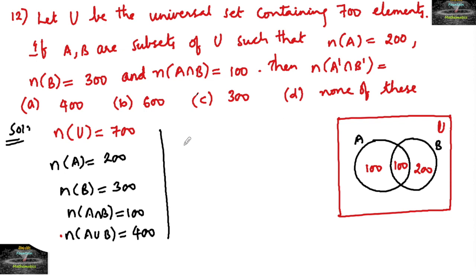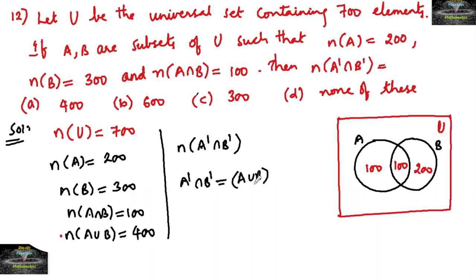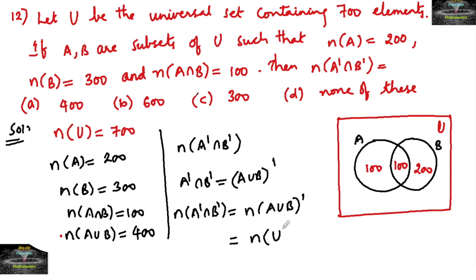Now to find n(A' ∩ B'): from De Morgan's law, A' ∩ B' = (A ∪ B)'. This represents the elements not belonging to A ∪ B — the elements outside of A ∪ B within the universal set U. So n(A' ∩ B') = n((A ∪ B)') = n(U) − n(A ∪ B).